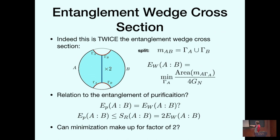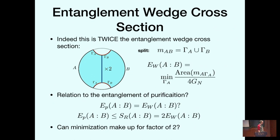We can come back to the relation between S_R and the entanglement of purification. The original conjecture was that the entanglement wedge cross-section equals the entanglement of purification. We know S_R gives an upper bound. The question is: can you minimize over all purifications and make up for this factor of two? Our duality is not actually inconsistent with the entanglement of purification duality — it could be that minimizing over all possible purifications makes up for this factor of two. However, you can check in simple quantum systems that EP is not always equal to S_R over two, so if the entanglement of purification conjecture is correct, it has to be true specifically for holographic theories.